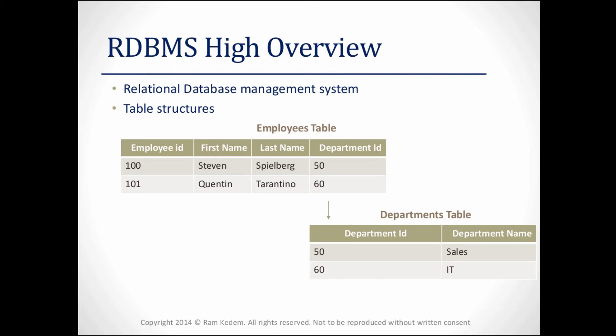This is very efficient, because if we had millions of rows inside the employees table, we wouldn't have to repeat the department name of each employee. Instead, each department name is only mentioned once in the departments table, and we can always join the information of both tables using the common column department ID.